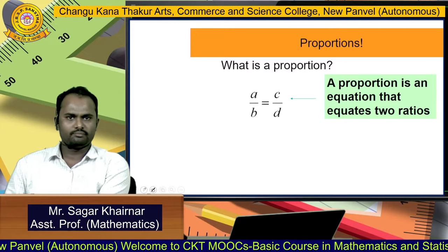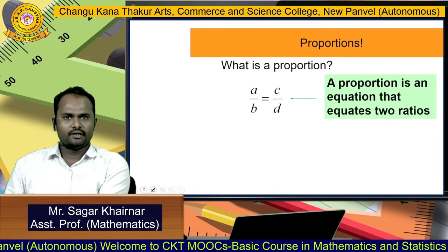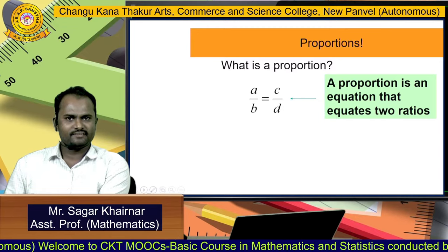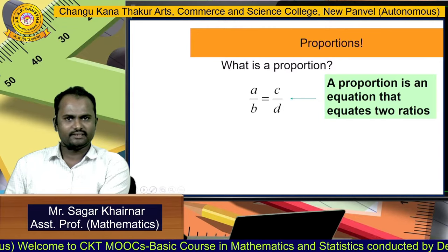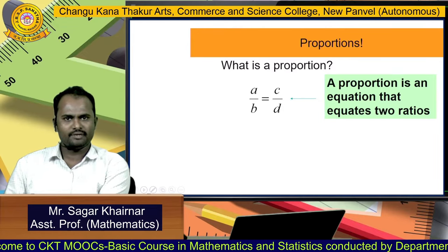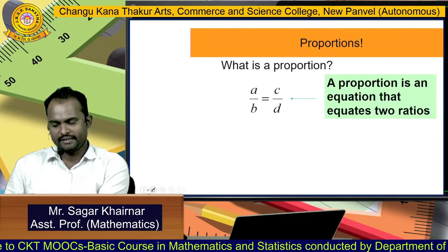For example, there are two ratios A as to B and C as to D. This can be written as A by B equal to C by D.